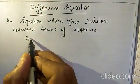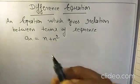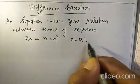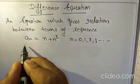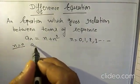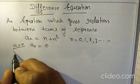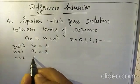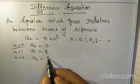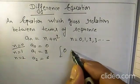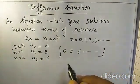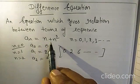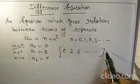We have a sequence An equal to N plus N squared. This is one example of the sequence where N is 0, 1, 2, 3 and so on. If N equals 0, A0 equals 0 plus 0, which is 0. If N equals 1, A1 equals 1 plus 1, which is 2. If N equals 2, A2 equals 2 plus 4, which is 6. So the sequence will be 0, 2, 6, and so on. The difference equation gives the relation between this sequence An equal to N plus N squared.